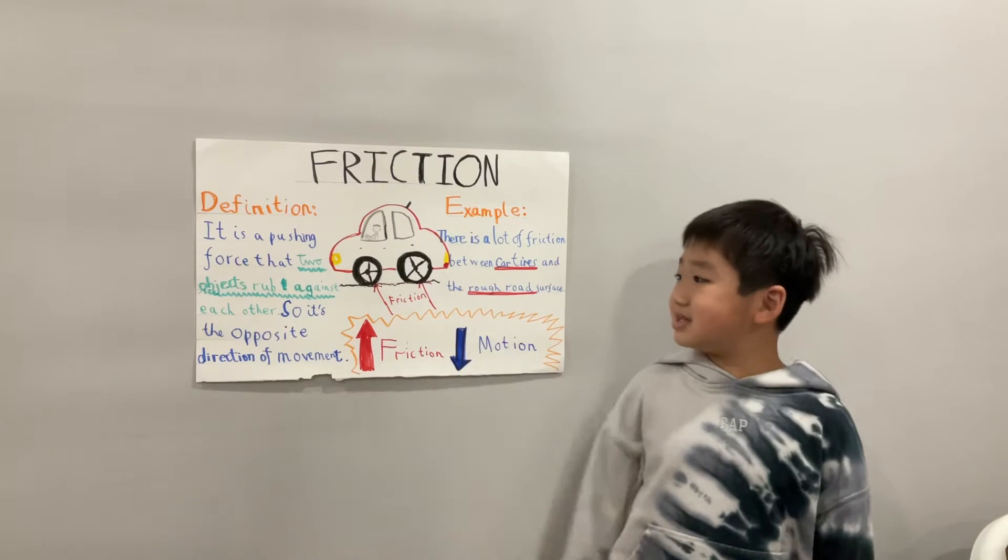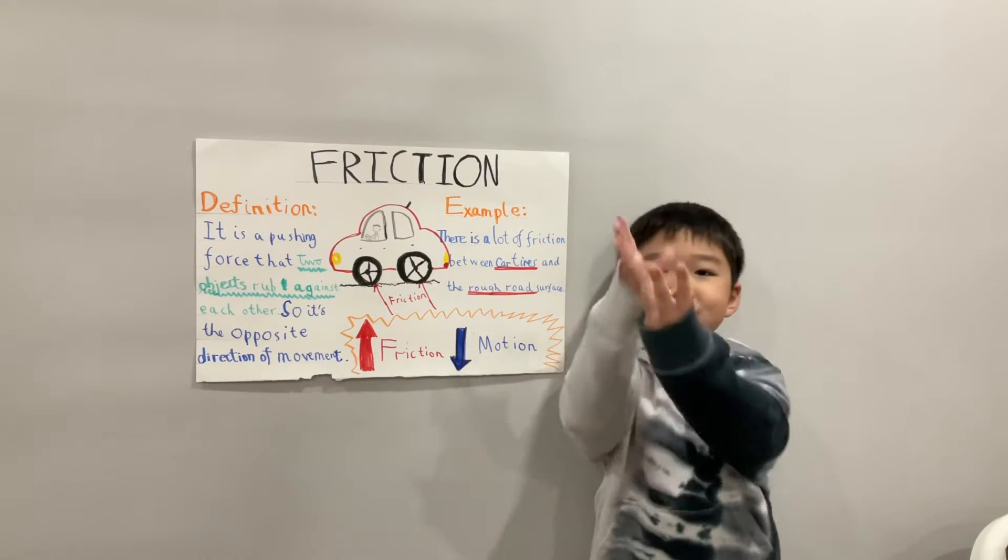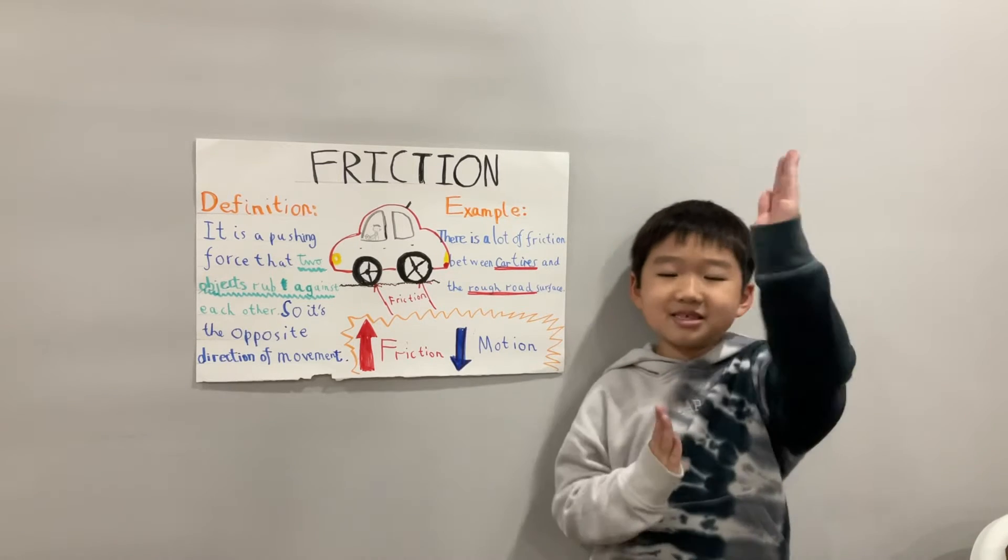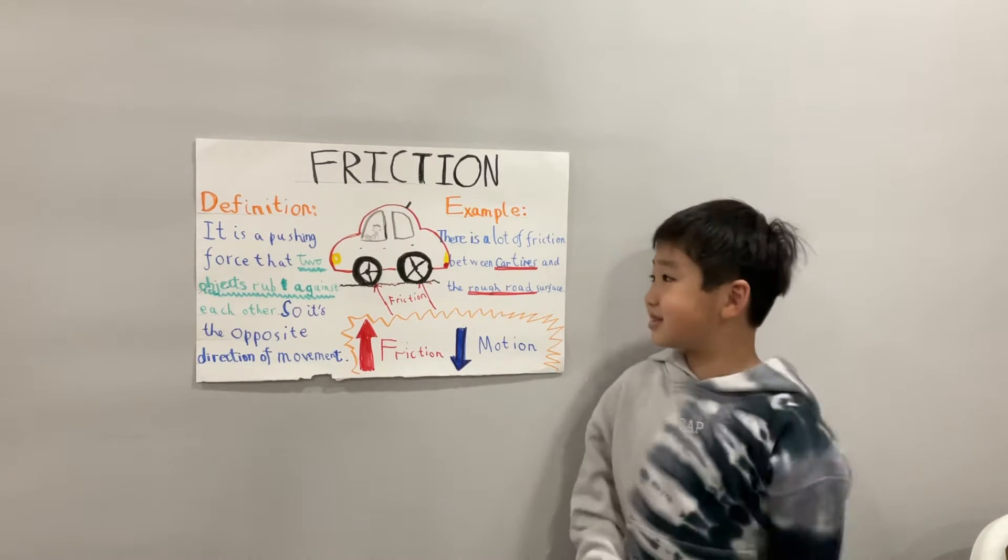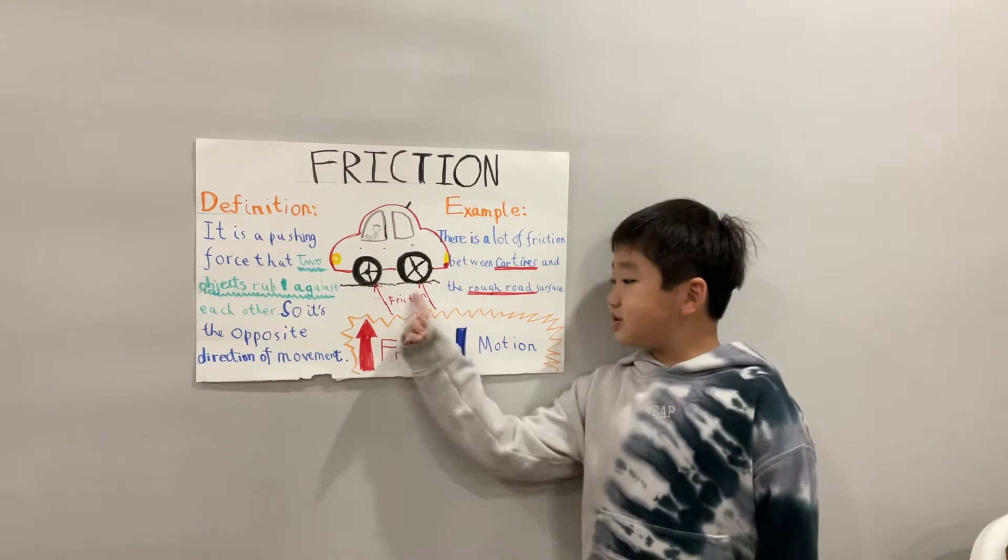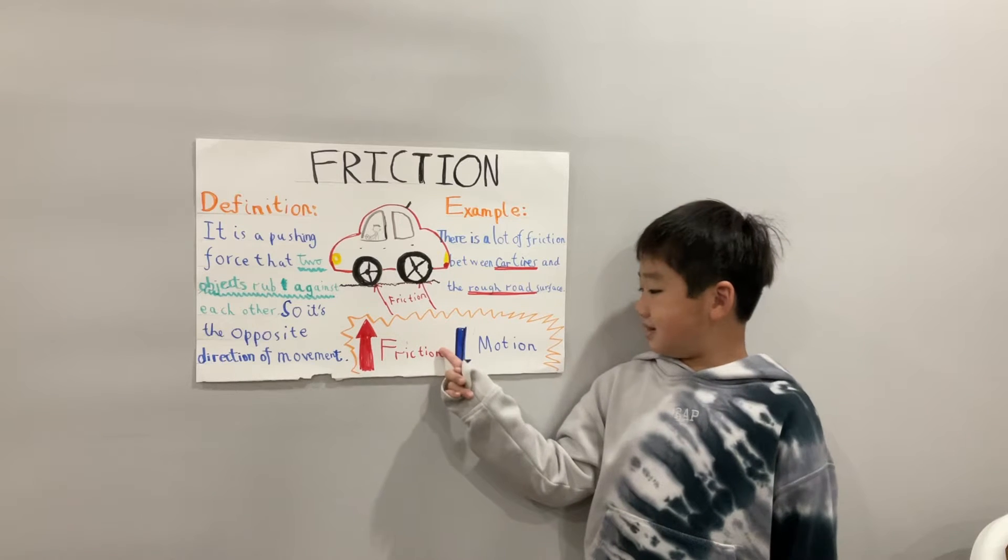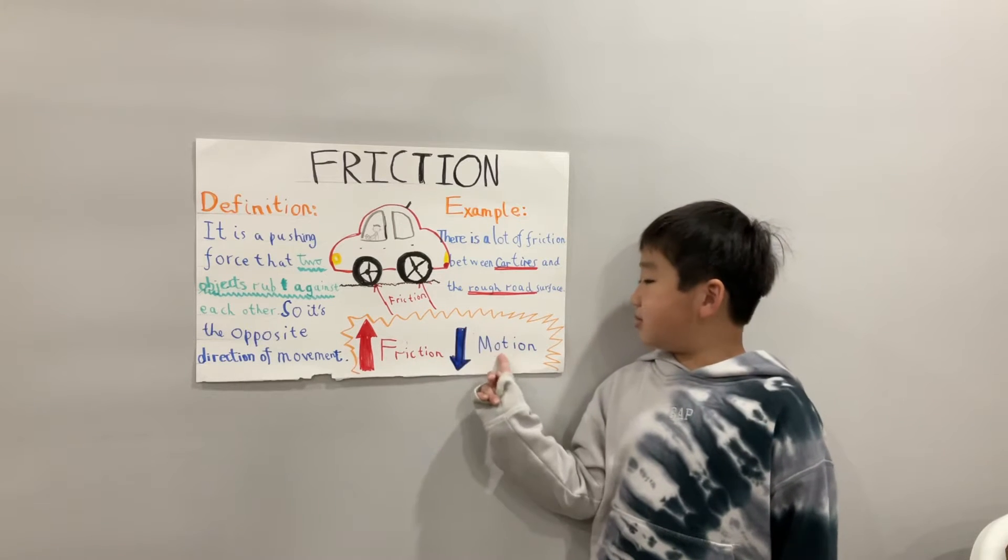Friction is a pushing force that two objects rub together. So it is the opposite of movement. If there is more friction, there will be less motion. If there is less friction, there will be more motion.